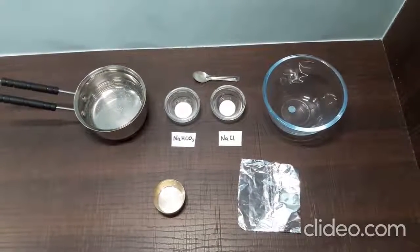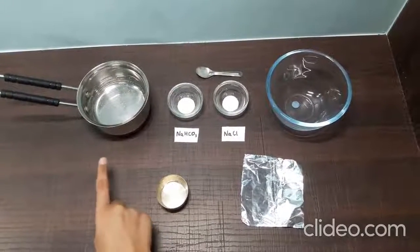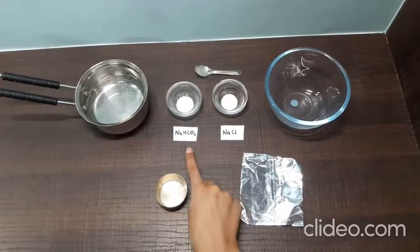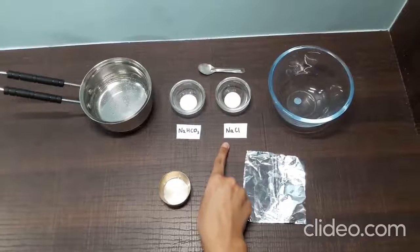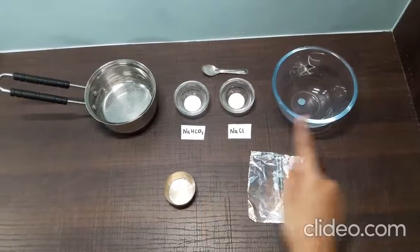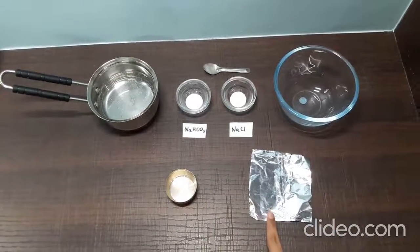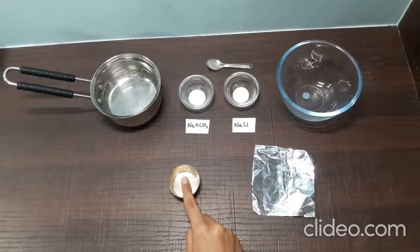The materials I will be using for this experiment are hot water, sodium bicarbonate also known as baking soda, sodium chloride also known as table salt, a bowl, aluminum foil, and a tarnished silver object.